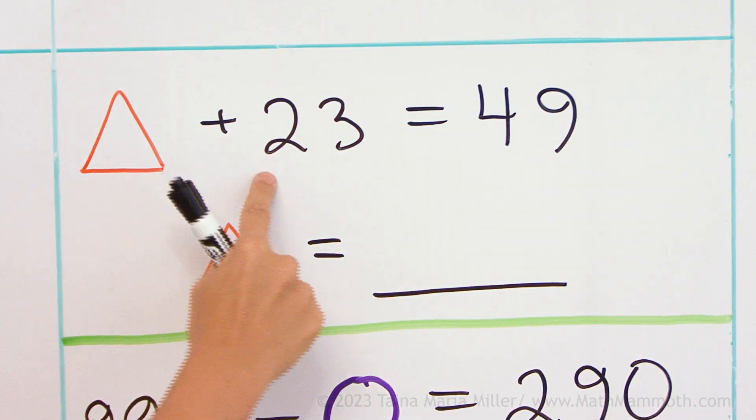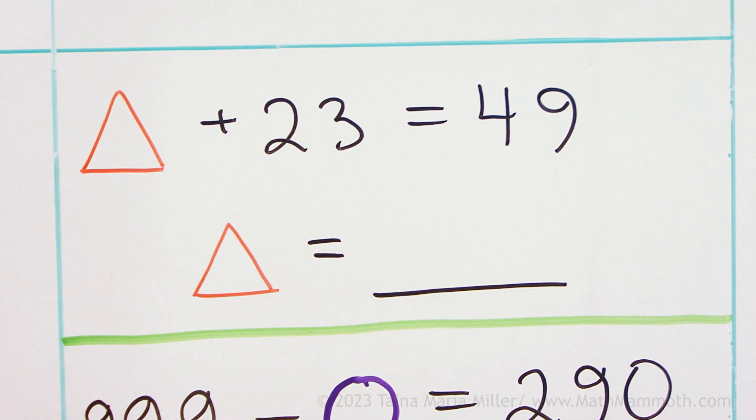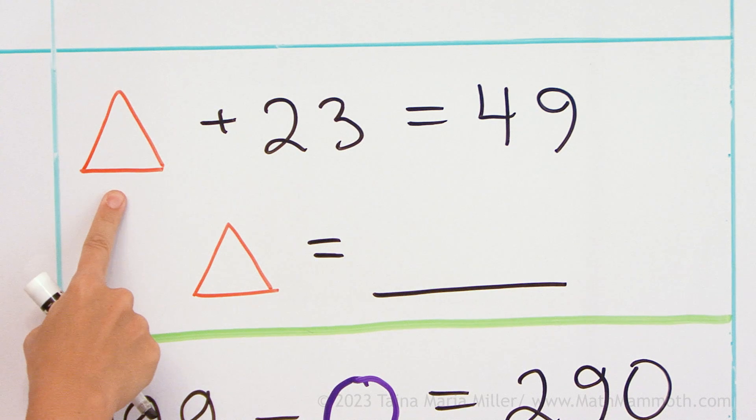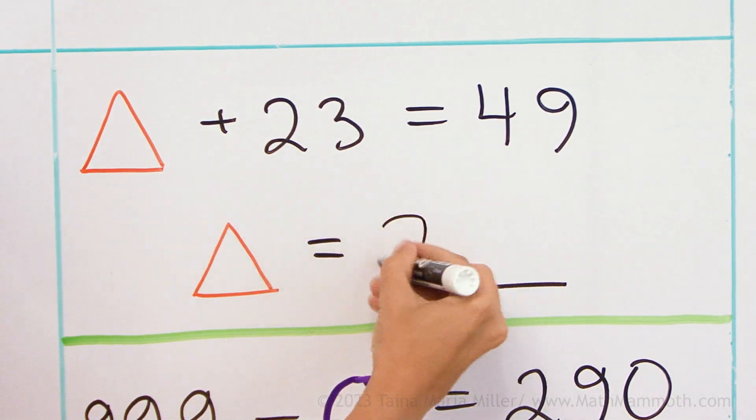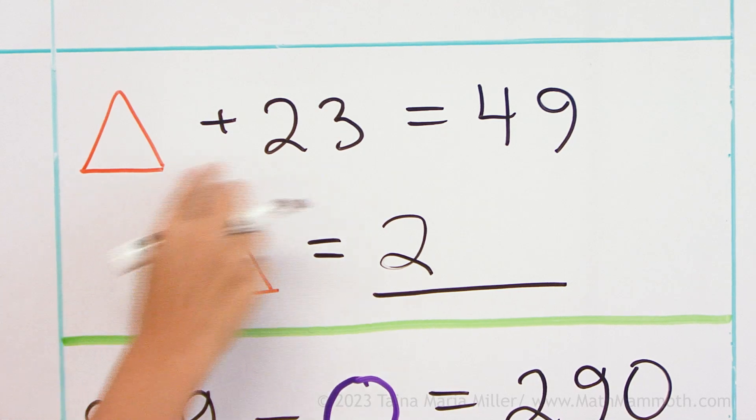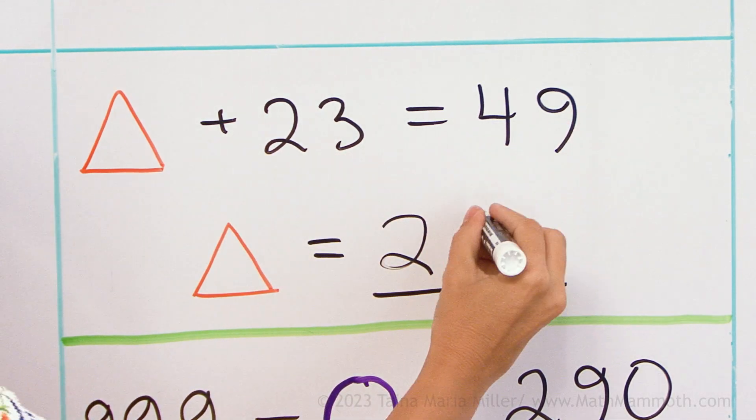A number plus 23 makes 49. It must be 20-something, right? 20, 40, and then something plus 3 makes 9 is 6.